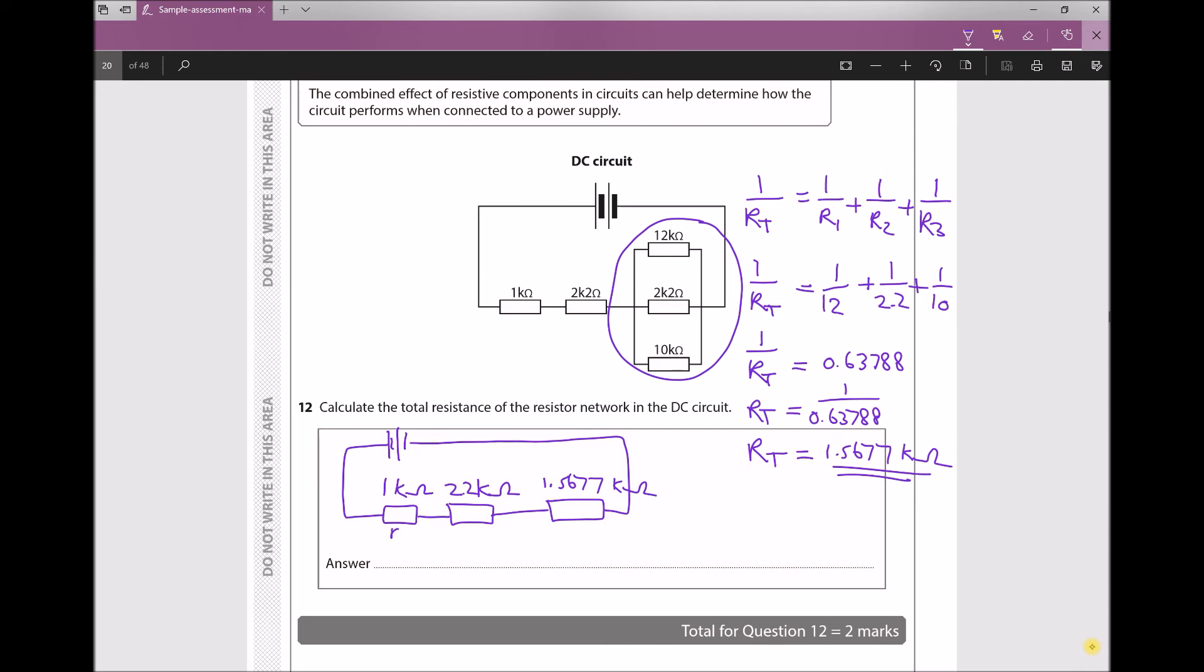If I call this resistor R1, and I call this resistor R2, and this new resistor I'll call R3, 4, 5, because it was the combination of resistors 3, 4, and 5.